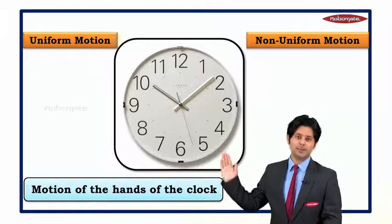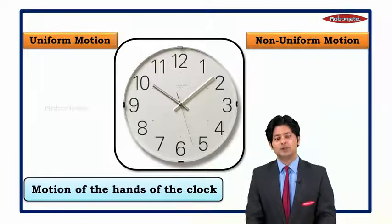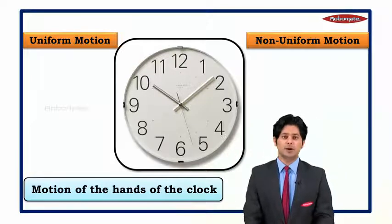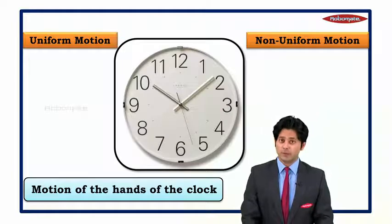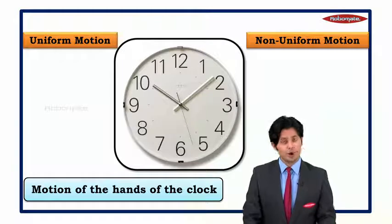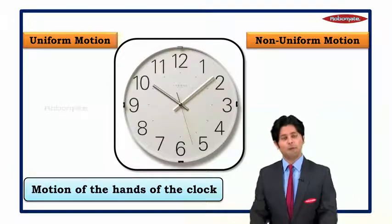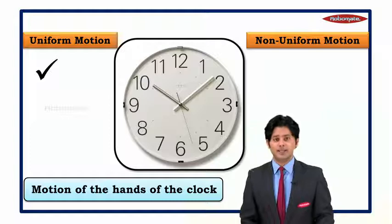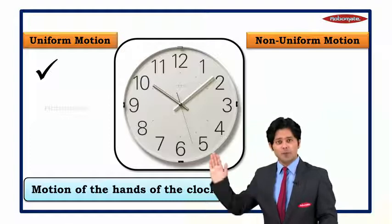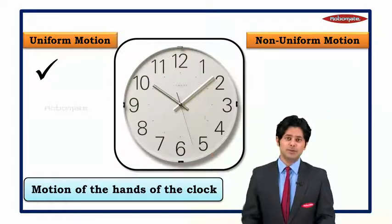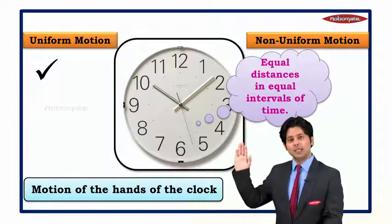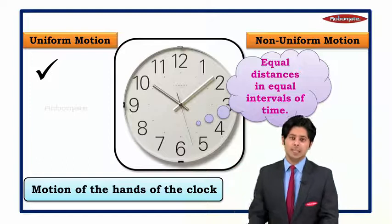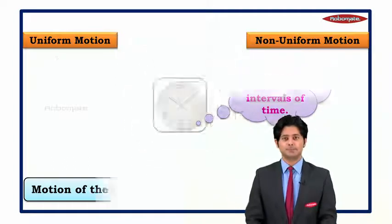The next example is quite familiar because we have already done it earlier. The movement of the hands of a clock — is it uniform or non-uniform motion? The answer is uniform motion, because it covers equal distance in equal interval of time.